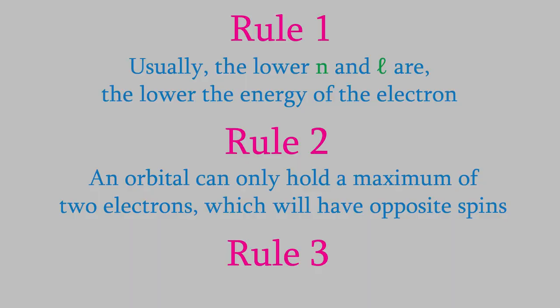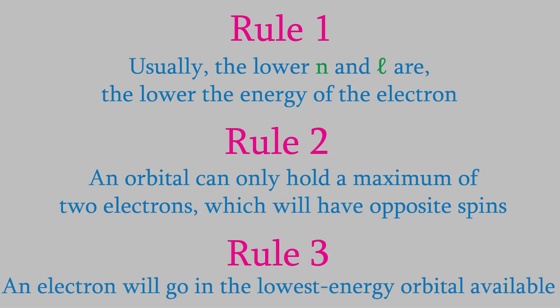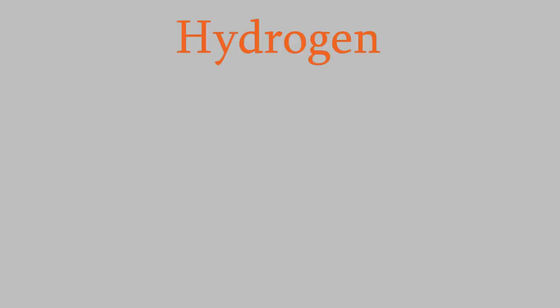The third and most important fact that we need to know is that electrons always want to have the lowest possible energy, so they'll always go to the lowest energy orbital unless that orbital is already full. Let's see what these three facts mean for the ways electrons behave in atoms. We'll start with the simplest atom, hydrogen. Using what we now know about electrons, we can determine all the quantum numbers for the electron in a hydrogen atom, and we'll also be able to tell what orbital it's in.